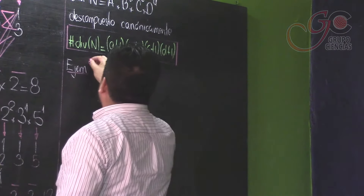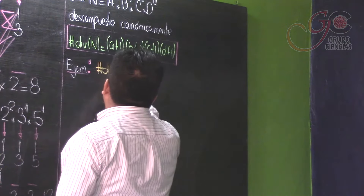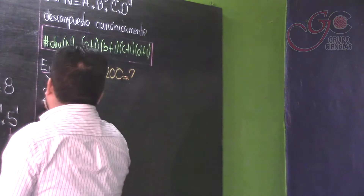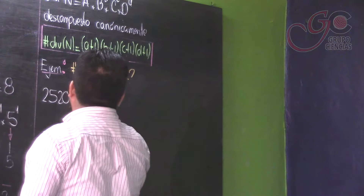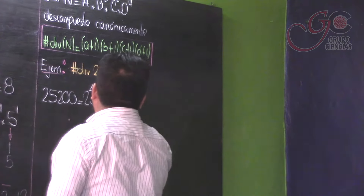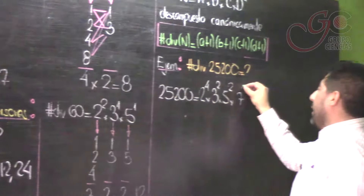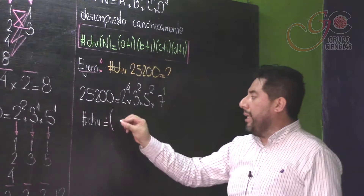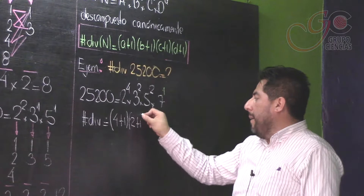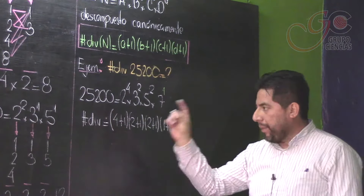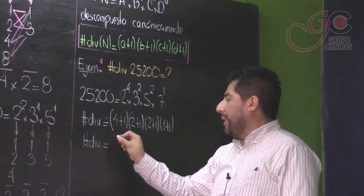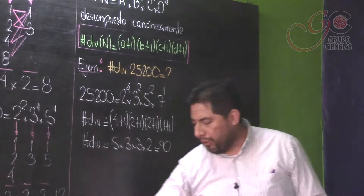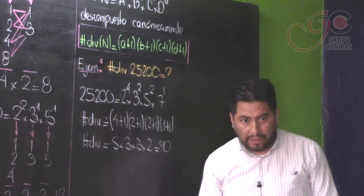¿Cómo saber la cantidad de divisores que tiene 25.200? 25.200 era 2 a la cuarta por 3 al cuadrado por 5 al cuadrado por 7. Si no hay exponente, se sobreentiende que es la unidad. ¿Cuántos divisores va a tener 25.200? Súmale 1 a todos los exponentes y luego multiplícalos: 5 por 3 por 3 por 2 resulta exactamente 90 divisores. 25.200 va a tener un total de 90 divisores.